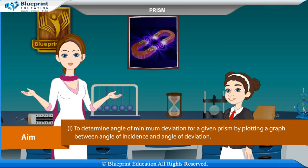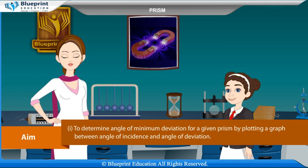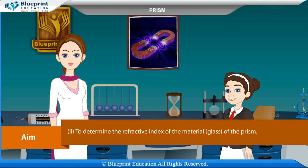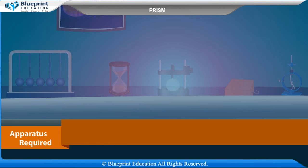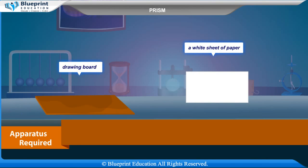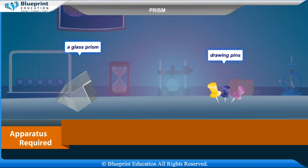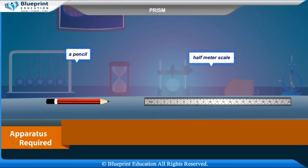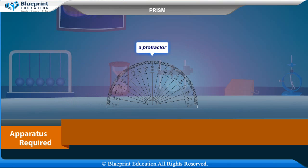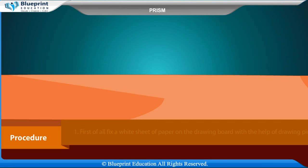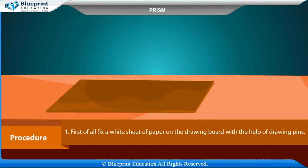Our aim is to determine the angle of minimum deviation for a given prism by plotting a graph between angle of incidence and angle of deviation. Apparatus required: drawing board, white sheet of paper, glass prism, drawing pins, pencil, half meter scale, office pins, graph paper, and a protractor.